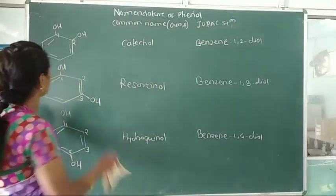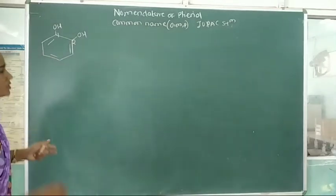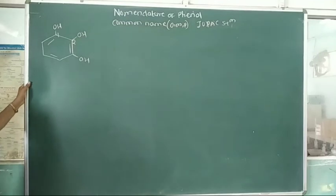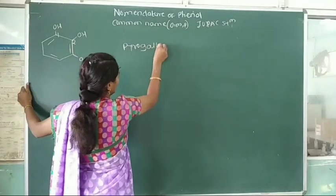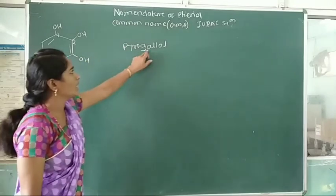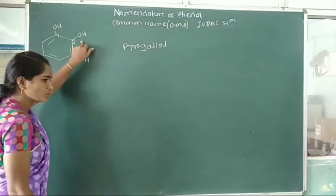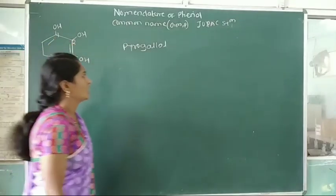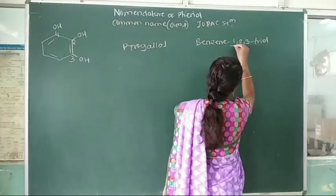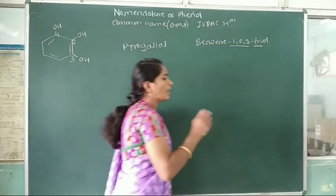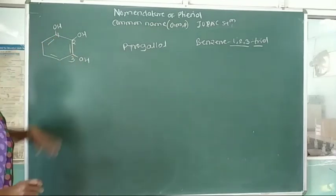Now we see another example: a benzene ring with three hydroxy groups attached to it. The common name of this compound is pyrogallol. In the IUPAC system, numbering 1, 2, 3 — the three hydroxy groups are attached to carbon 1, carbon 2, and carbon 3. Therefore the IUPAC name is benzene-1,2,3-triol.